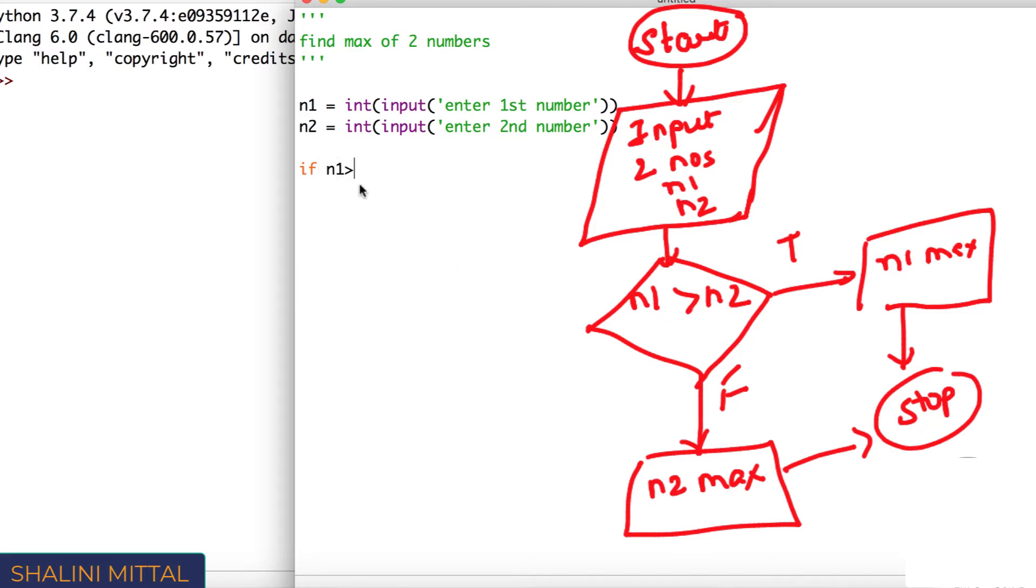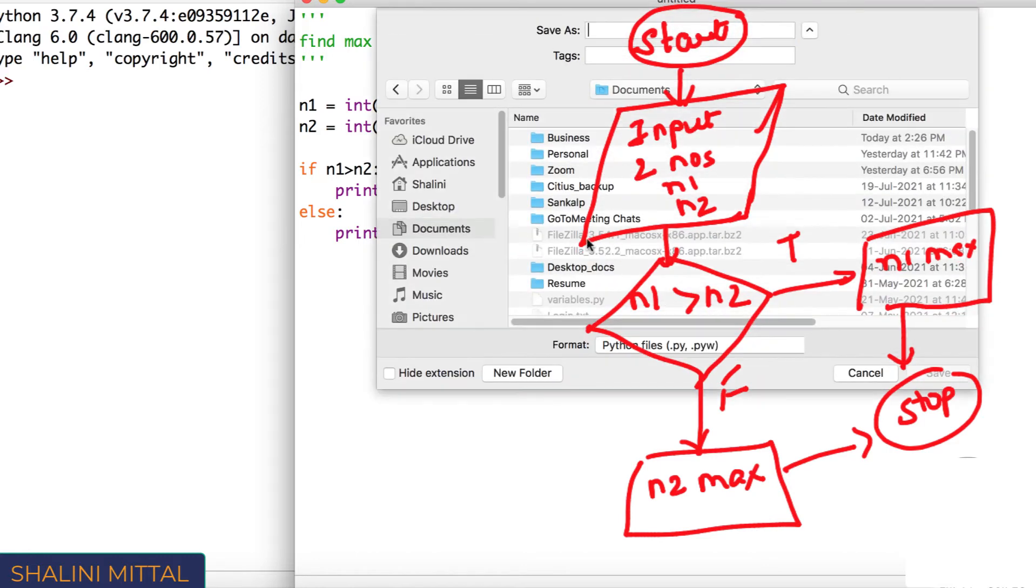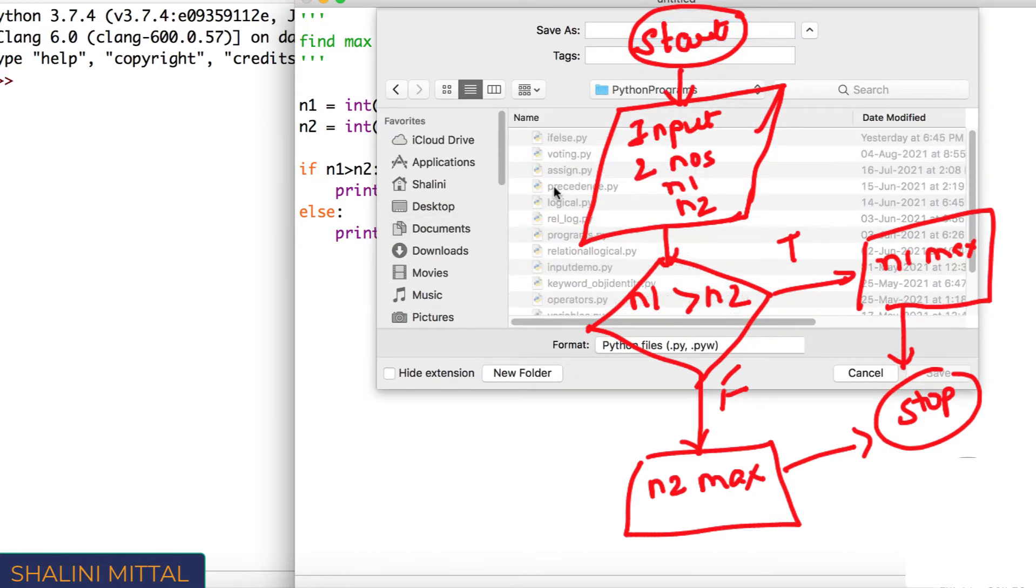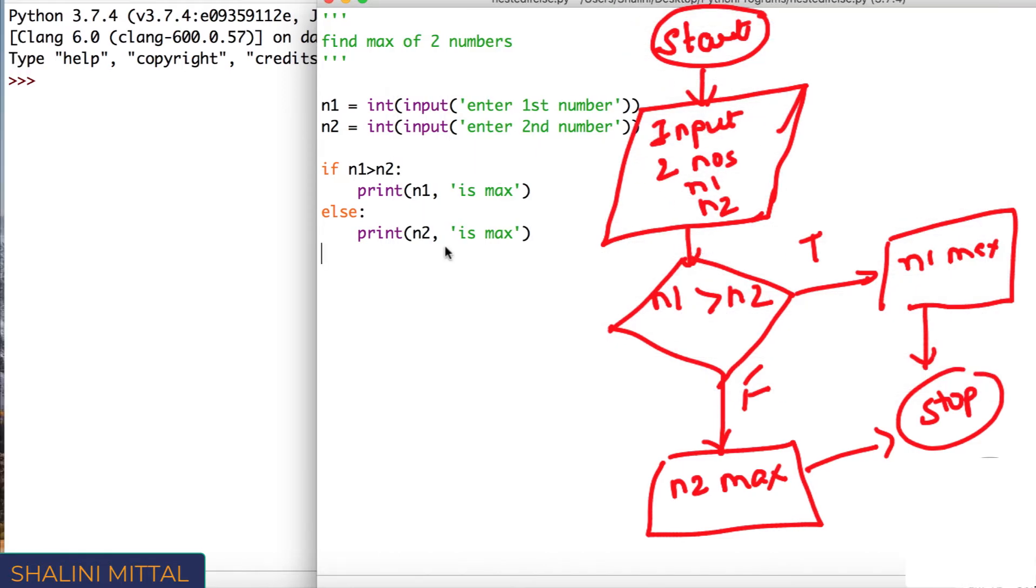So I'll say if n1 greater than n2, then I will be printing, else will write n2 is max, because if it is true, you go on to the right side. If it is false, you print n2 is max and then your program stops. So we'll just save it and let's execute.